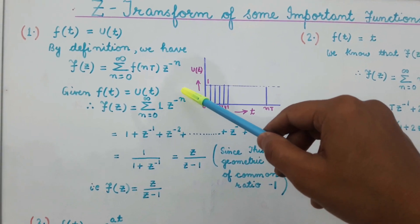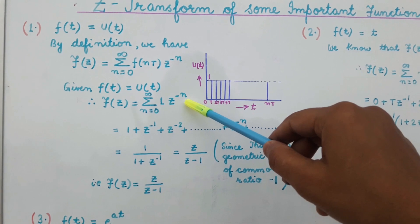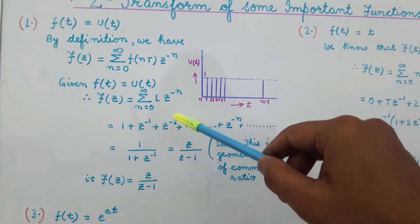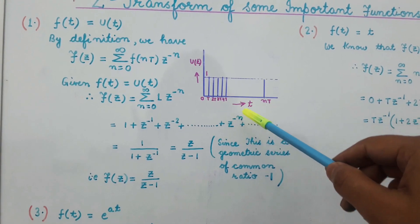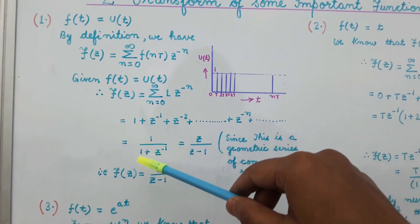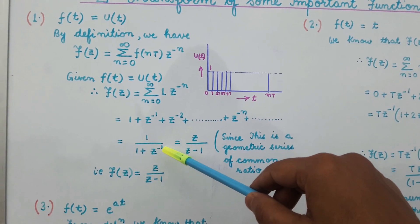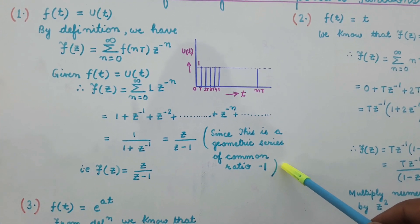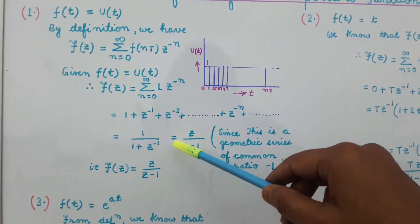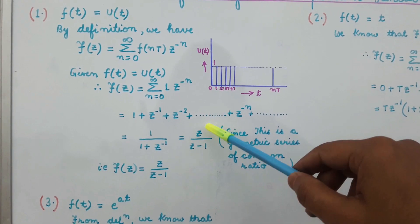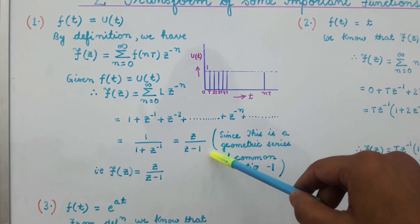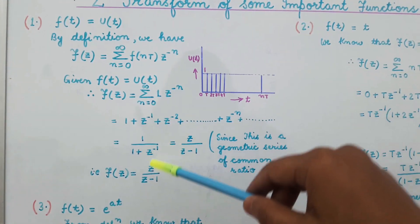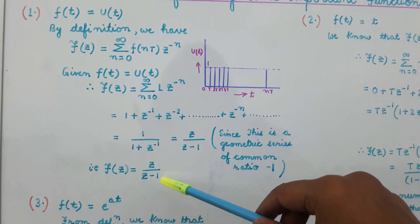On substituting different values of n, this equation becomes 1 + Z^(-1) + Z^(-2) + ... + Z^(-n) and so on. This equals 1 divided by (1 - Z^(-1)), because this is a geometric series whose common ratio is Z^(-1). This simplifies to Z divided by (Z - 1). So the Z transform of the unit step function is F(Z) = Z / (Z - 1).